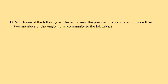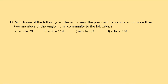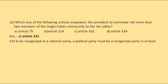Which one of the following articles empowers the President to nominate not more than two members of the Anglo-Indian community to the Lok Sabha? The options are Article 79, Article 114, Article 331, or Article 334. The correct answer is Article 331.